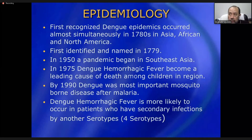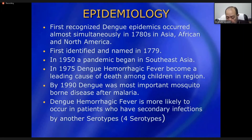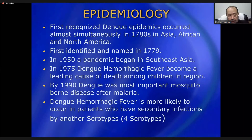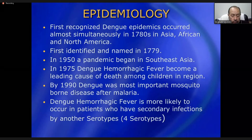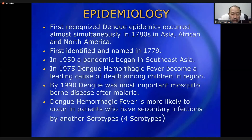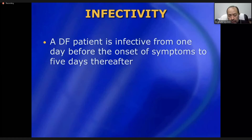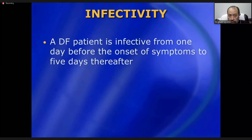When the dengue virus — whether DEN-1, DEN-2, DEN-3, or DEN-4 — first enters the body, it causes dengue fever symptoms: intense malaise, bone pain, high-grade fever, weakness. But when a second infection occurs with a different serotype a few months after the first, the disease becomes more severe and dangerous, and the presentation is most often dengue hemorrhagic fever.